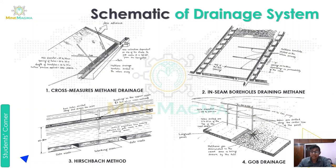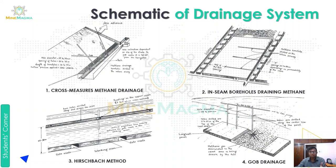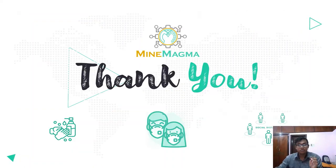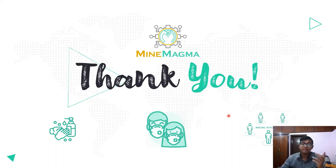I hope you understood this part, in which we covered the performance test on FSL — how the FSL reacts and what percentage of gas we can determine — and also the four types of methane drainage systems. By this we have finished this topic. Make sure to like and subscribe our channel to get more information about mining. Thank you.